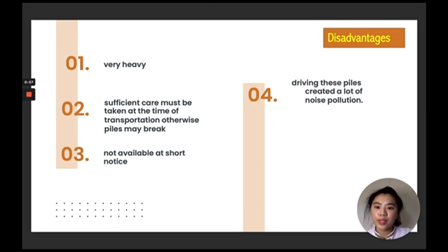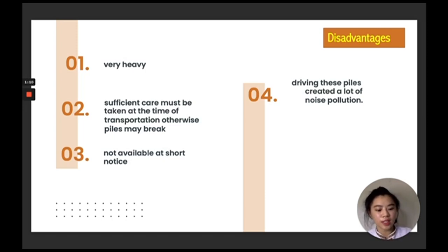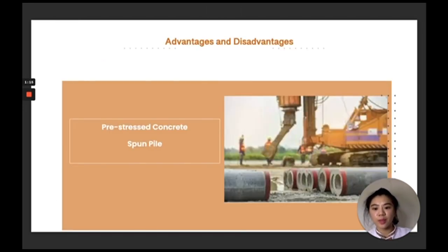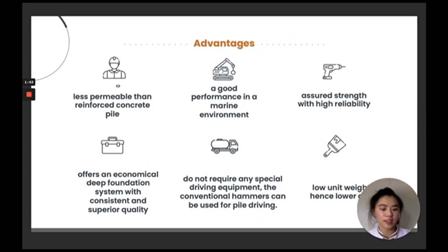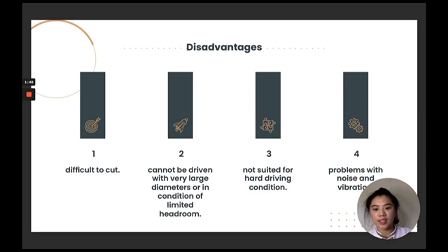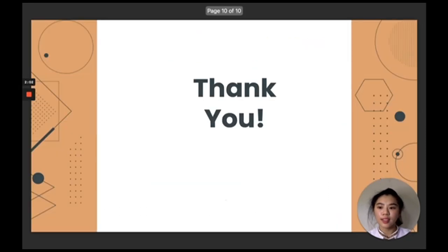The disadvantages of square pile are: it is very heavy; sufficient care must be taken at the time of transportation, otherwise the pile may break; not available at short notice; and driving this pile creates a lot of noise pollution. The advantages of spun pile are: less permeable than reinforced concrete pile; good performance in marine environment; high strength with high reliability; offers an economical deep foundation system with consistent and superior quality; does not require any special driving equipment — conventional hammers can be used; and low unit weight, hence lower cost. The disadvantages are: difficult to cut; cannot be driven with very large diameter or in conditions of limited headroom; not suited for hard driving conditions; and problems with noise and vibration.